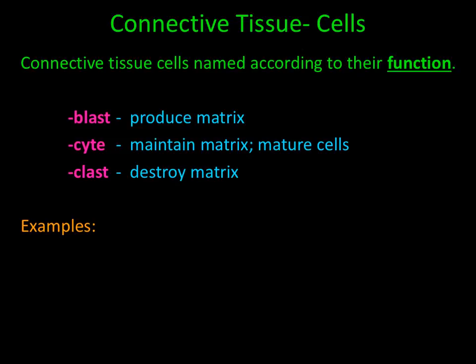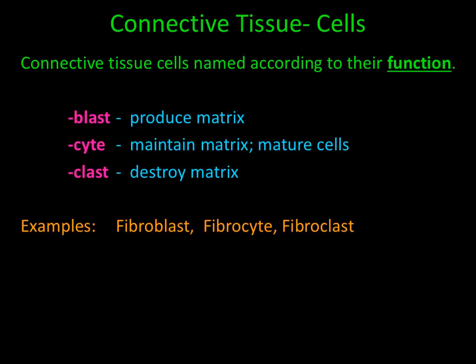Examples of connective tissue cells include the following: a fibroblast, a fibrocyte, and a fibroclast. Fibroblasts produce fibers, a fibrocyte maintains fibers, and a fibroclast will destroy or break down fibers. Another example of connective tissue cells are the osteoblast, osteocyte, and osteoclast.